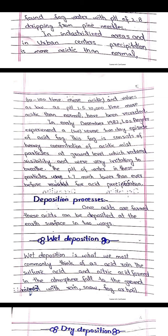In early December 1982, Los Angeles experienced a severe two-day episode of acid fog. This acid fog consisted of heavy concentration of acid mist particles at ground level, which reduced visibility and was very irritating to breathe. The pH of this fog was 1.7, much lower than ever before recorded for acid precipitation.